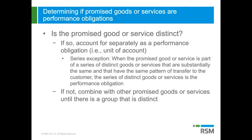Once you've identified the promised goods or services, you then need to look to see if the good or service is distinct. If it is, you'd account for it separately as a performance obligation. If it is not distinct, you combine it with other promised goods or services until there's a group that's distinct. On the next couple of slides, we'll talk about what criteria you need to meet for a good or service to be considered distinct.